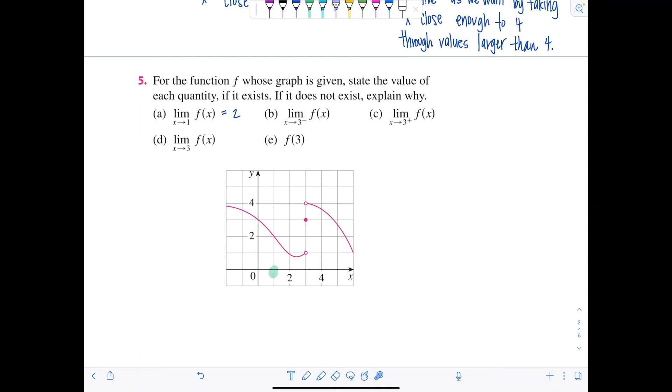All right, part b says the limit as x approaches 3. This little minus sign here means from the left of f of x. So here's 3, but we're coming from the left. So imagine you're walking on the graph, doo-dee-doo-dee-doo. What y value are you approaching? You're approaching 1. Now I know there's an open circle there, but that doesn't matter when we're talking about the limit. The limit is what you're tending toward, not necessarily what the graph is equal to at that point. So the limit as x approaches 3 from the left is 1.